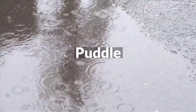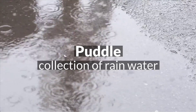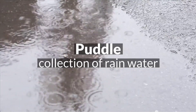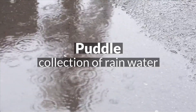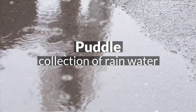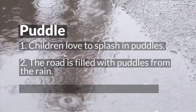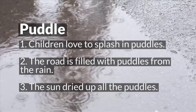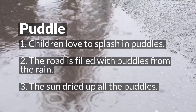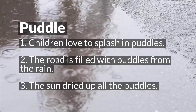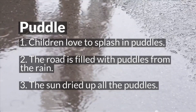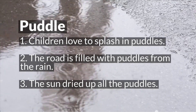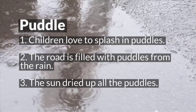Puddle. A puddle is a collection of rain water outside during the rains. 'Children love to splash in puddles.' 'The road is filled with puddles from the rain.' 'The sun dried up all the puddles.'